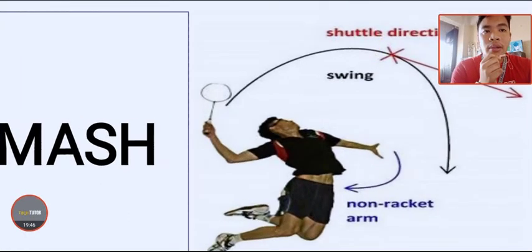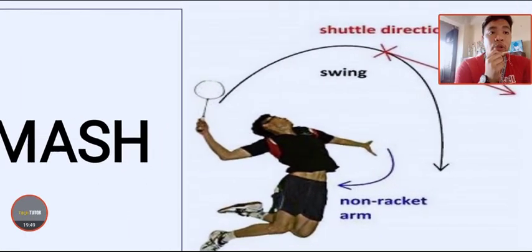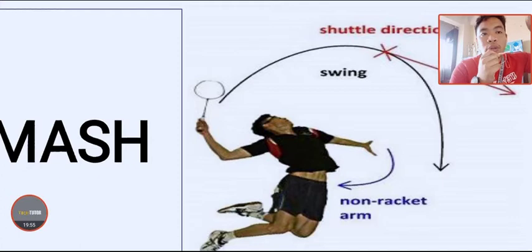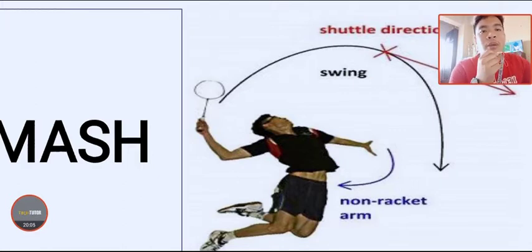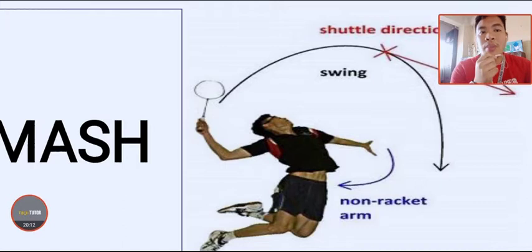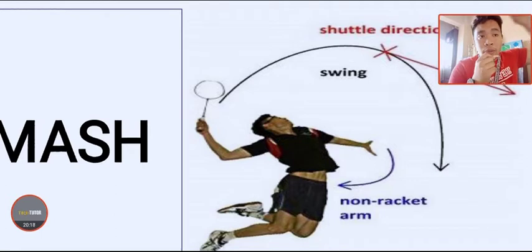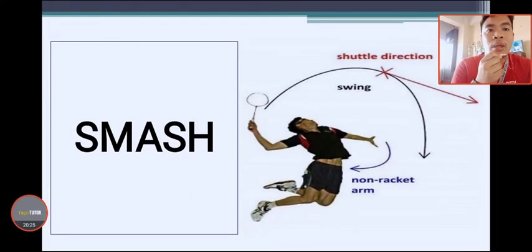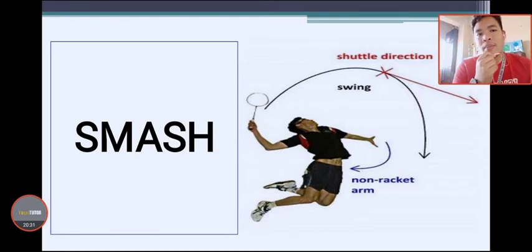The shuttle must be hit with a strong downward position and a tremendous wrist snap at the highest possible point and in front of the body, making sure the shuttle travels downward at great speed. The smash is most commonly used by professional badminton players. Through the overhead swing and body momentum, use the follow-through of the racket arm. But don't overdo it — if the smash is too powerful, the shuttle may go out.